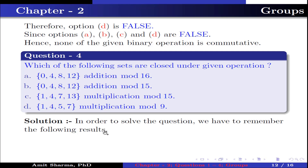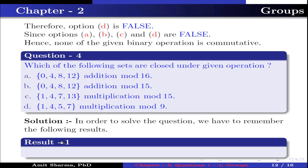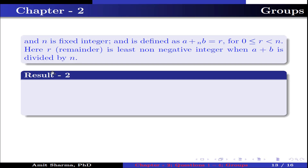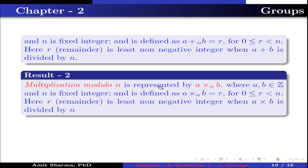In order to solve the question, we have to remember the following results. Result 1: addition modulo n is represented as a +ₙ b, where a, b belong to ℤ and n is a fixed integer, defined as a +ₙ b = r for 0 ≤ r < n, where r is the least non-negative remainder when a+b is divided by n. Result 2: multiplication modulo n is represented as a ×ₙ b, defined as a ×ₙ b = r for 0 ≤ r < n, where r is the least non-negative remainder when a×b is divided by n.